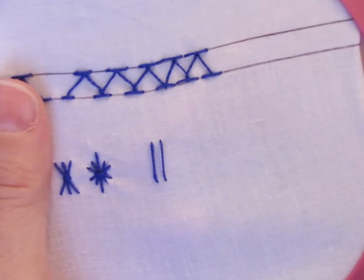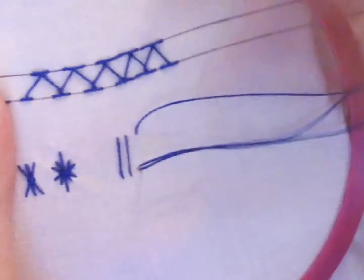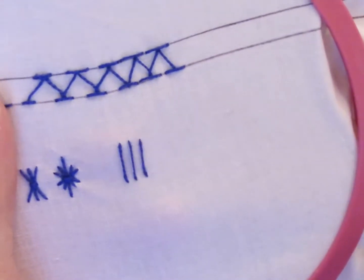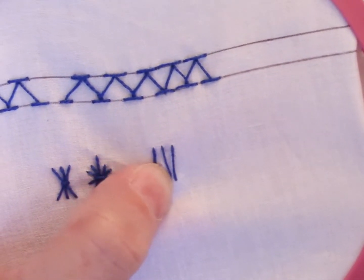Just straight stitches, and then we're going to come up under the middle stitch. You can kind of move it out of your way.